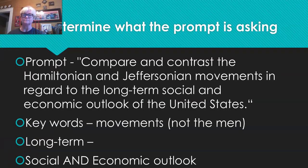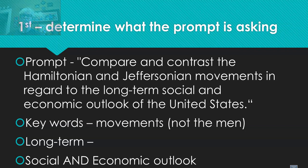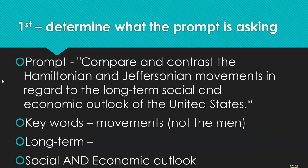Number one, determine what the prompt is asking. So basically what we're going to do is look at the keywords in the prompt. This one — you're comparing what's the same and contrasting what's different about the Hamiltonian and Jeffersonian movements in regard to the long-term social and economic outlook of the United States.